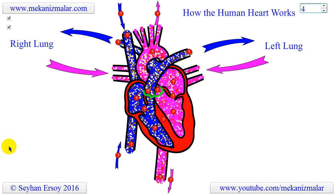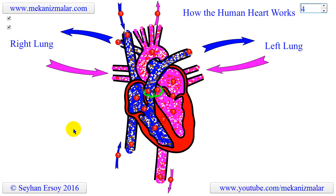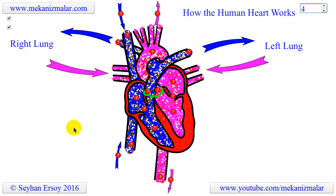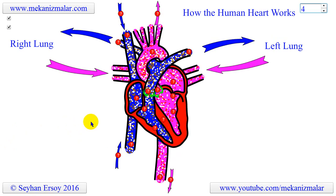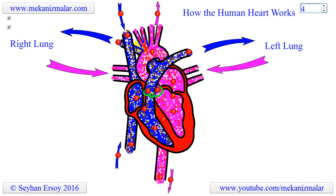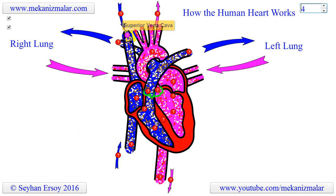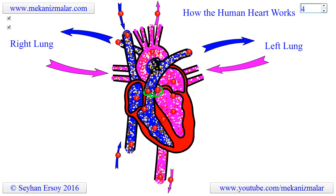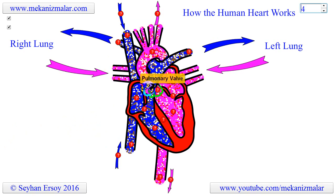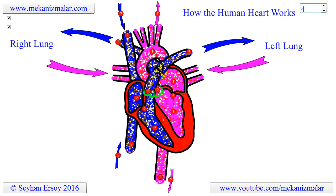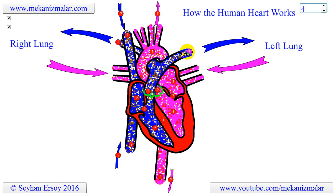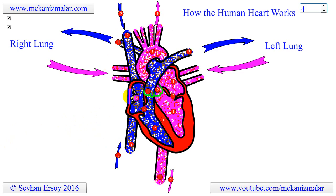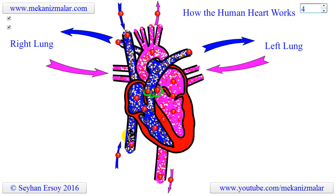The veins are also major blood vessels connected to your heart. The pulmonary veins carry oxygen-rich blood from the lungs to the left side of the heart so it can be pumped to the body. The superior and inferior vena cava are large veins that carry deoxygenated blood from the body back to the heart.